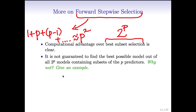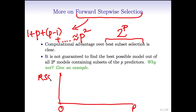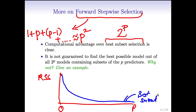Consider the RSS picture as a function of model size. For best subset, the RSS curve keeps going down and might flatten out. For forward stepwise, the curve has the same shape but typically sits above the best subset curve. They start in the same place because for one variable both methods pick the same best variable, and they meet at the end with all P predictors, but in between there's a gap. Forward stepwise's RSS for a given model size will typically be above that of best subset because it's not searching among all possible models.